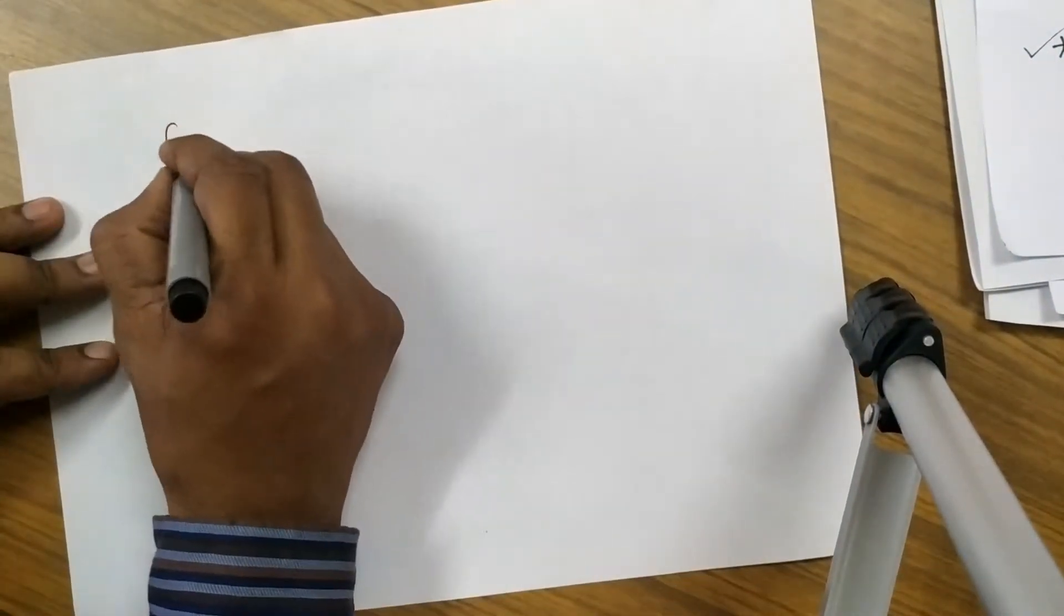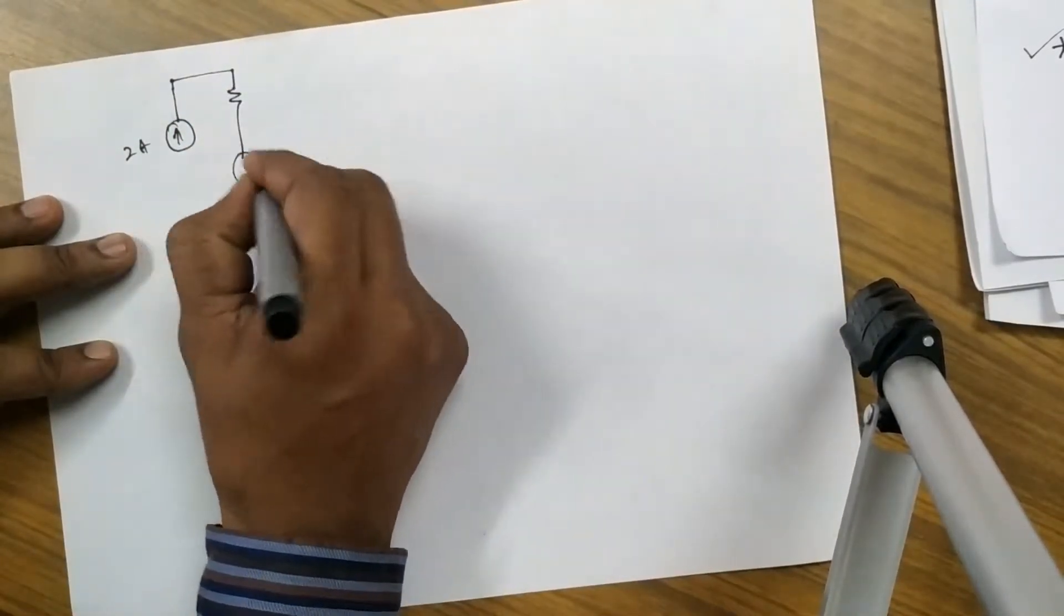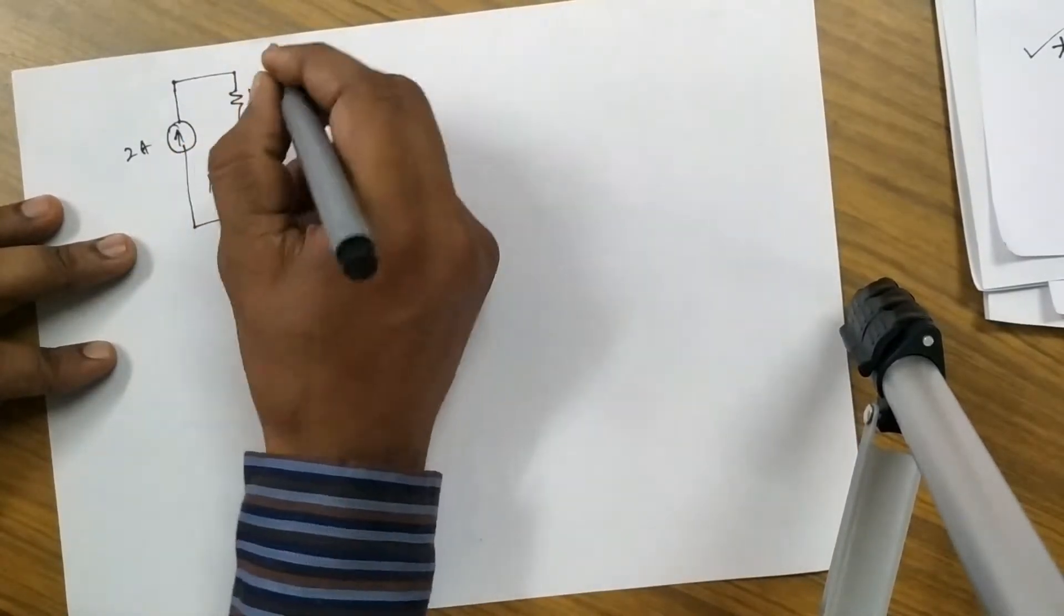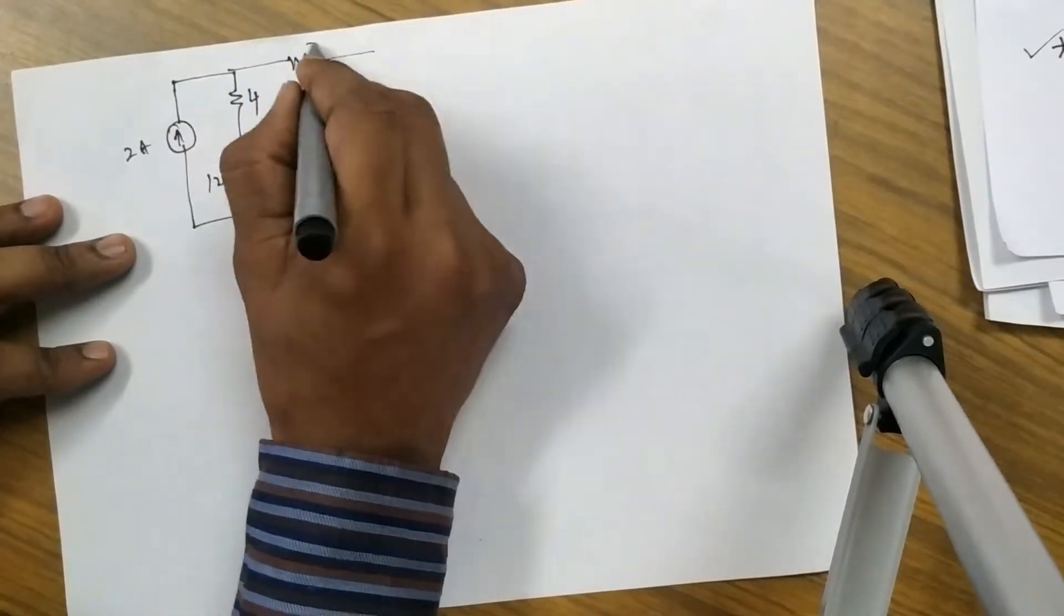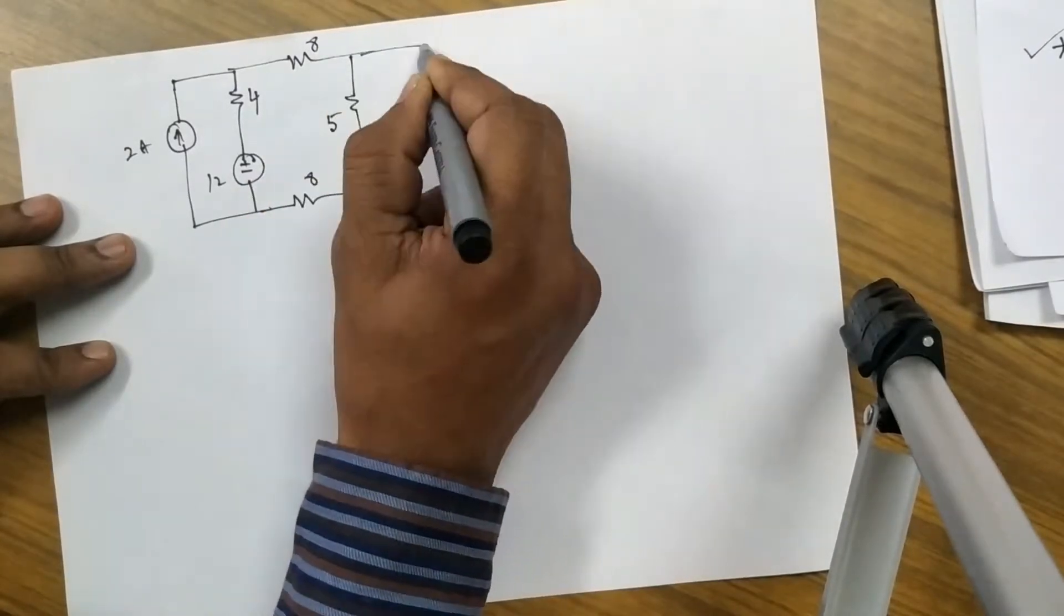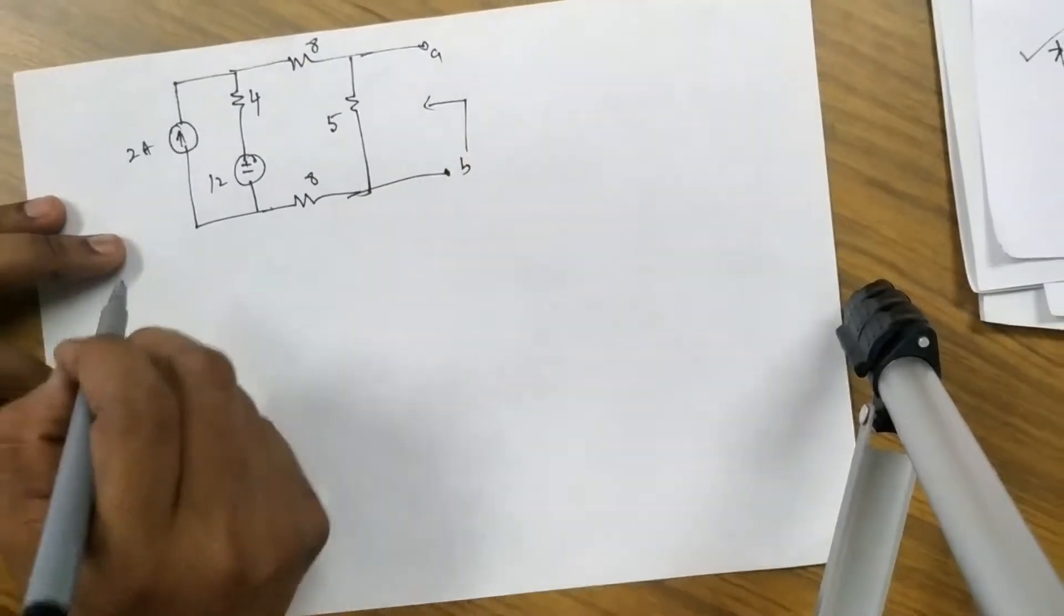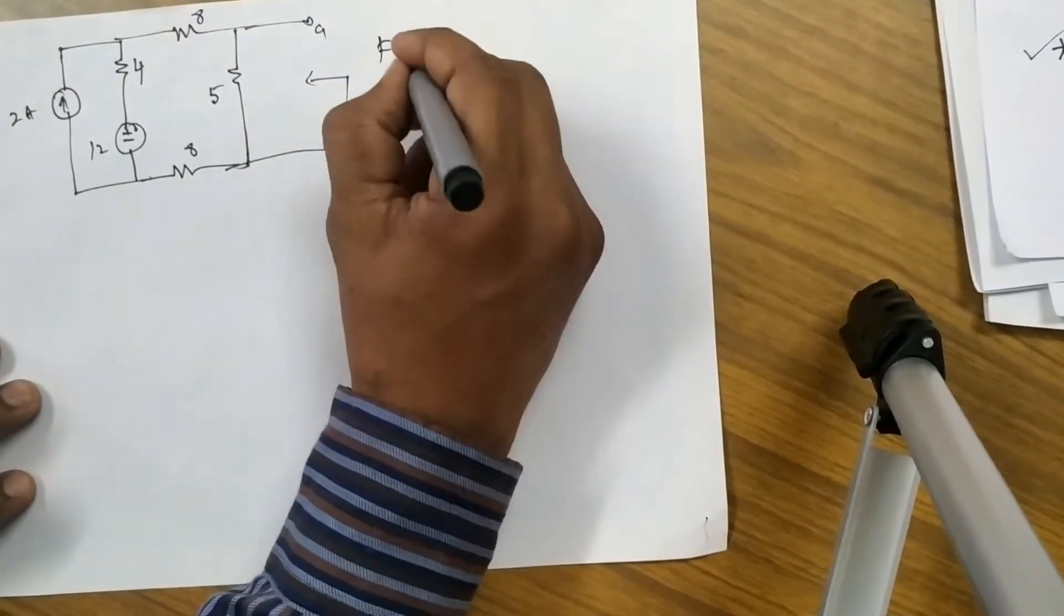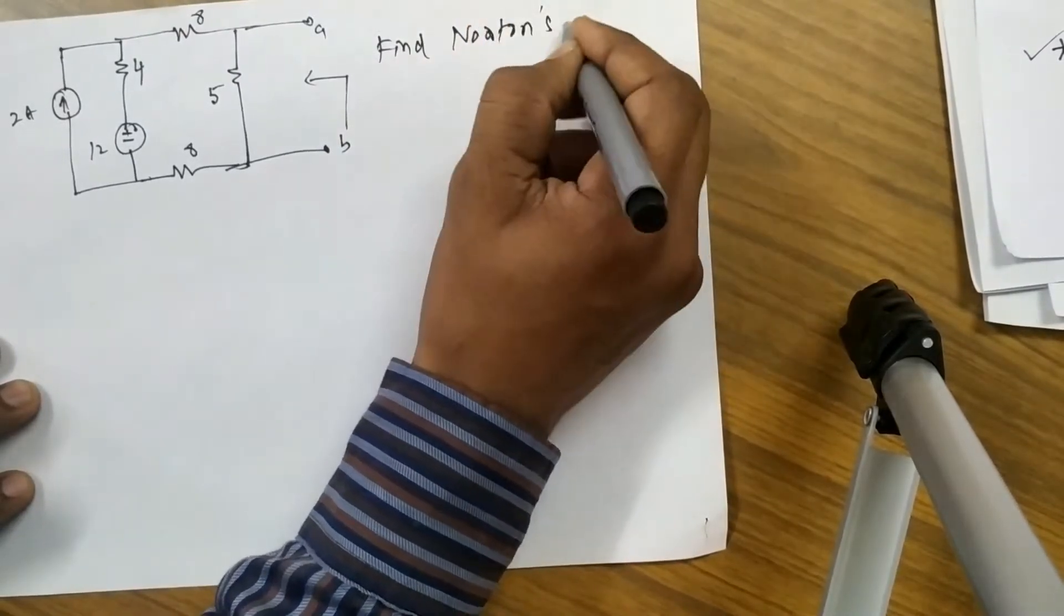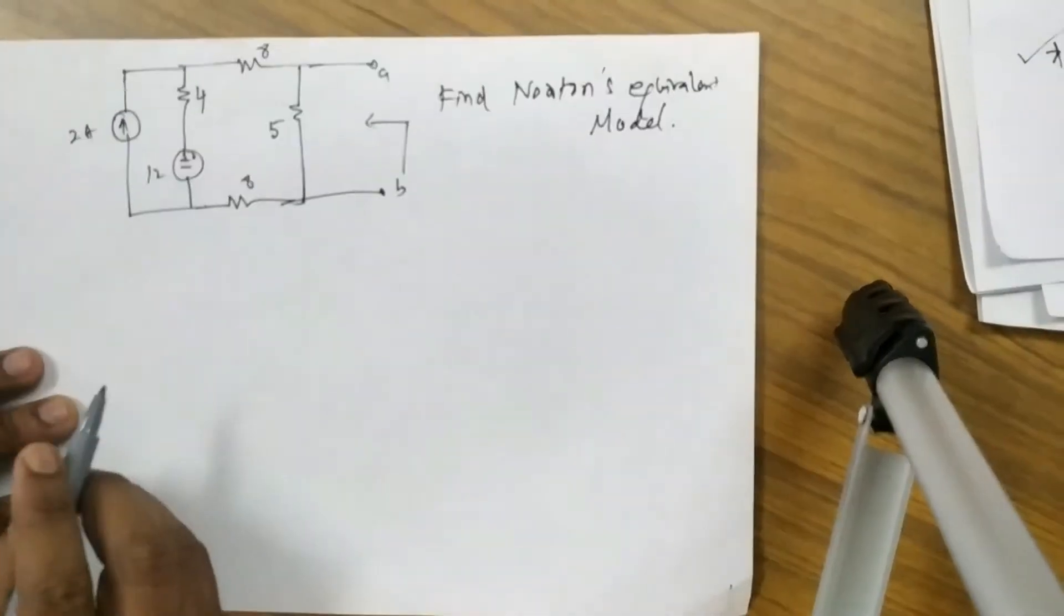So we got a circuit: 2 amps and this is 12 volt battery, this is 4 and this is 8, this is also 8, this is 5 AB. So find equivalent or Norton's equivalent model.